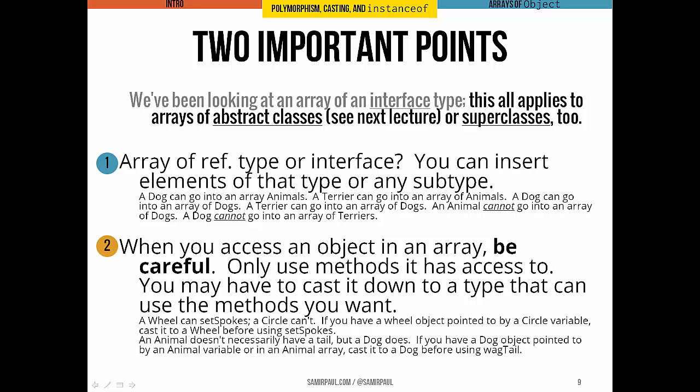First is this: when the element type of an array is a reference type or an interface or a superclass, objects of those types or of any subtype, you can insert them directly into the array. Pause it for a second, read through the little text under here if you want clarification or some examples. Second big point to walk away with: after you access an object in an array, you've got to be careful. You've got to send it only the messages, you've got to call only the methods that it can handle, or you need to cast it down to a type that actually can run those methods. Don't try to call setSpokes with a circle.